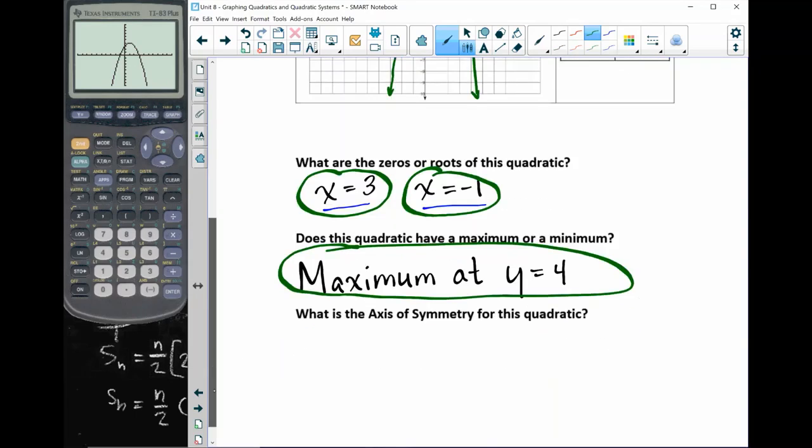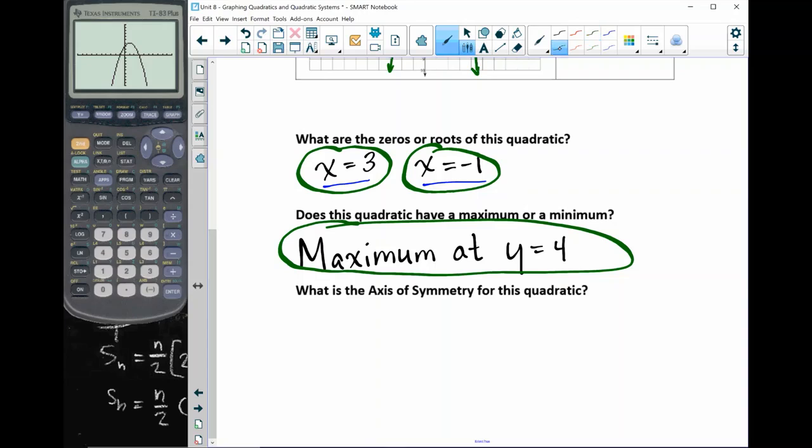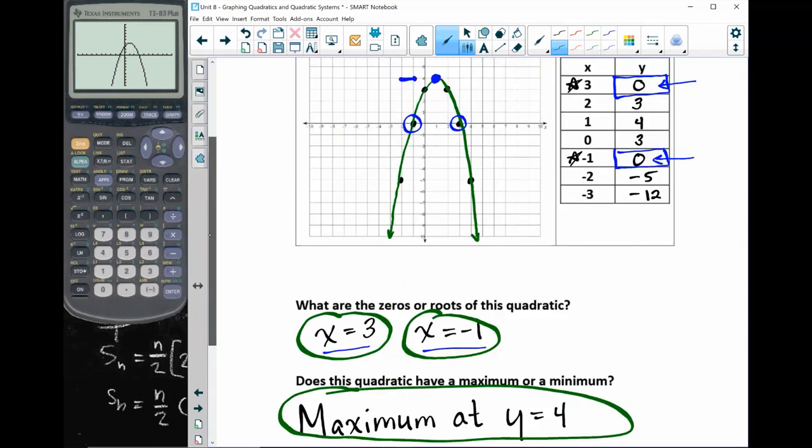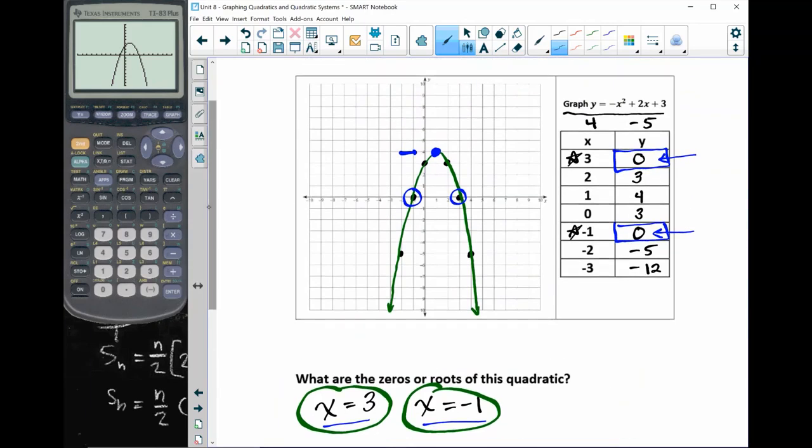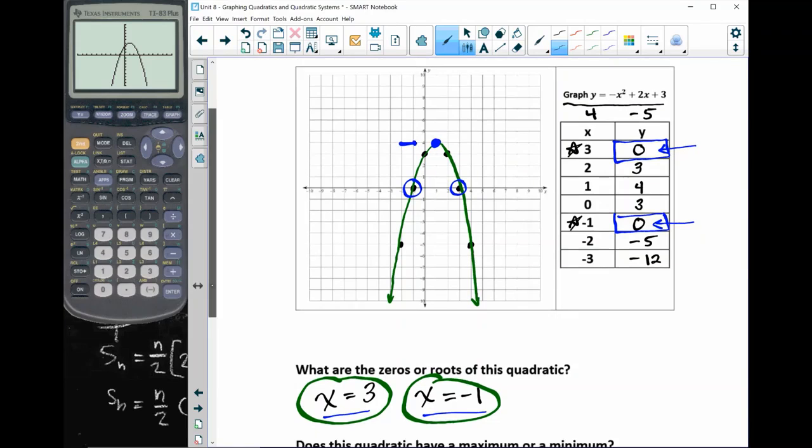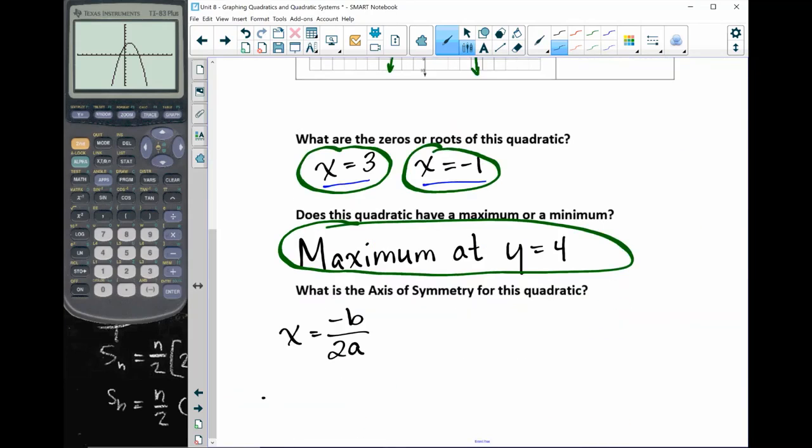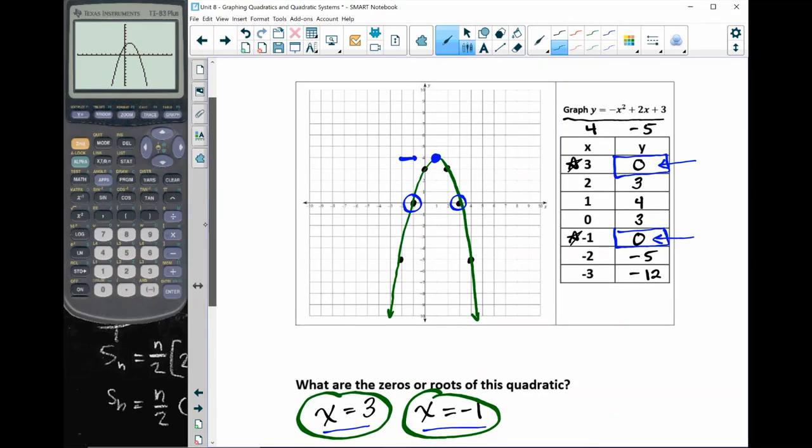Okay, what is the axis of symmetry for this equation? Well, if you remember, there is an equation. It's x equals negative b over 2a. Now I'm going to look at my quadratic formula or my equation up here. It's negative x squared plus 2x plus 3. So I'm going to copy that down. Negative x squared plus 2x plus 3. I'm just going to double check that I got that right. Beautiful.